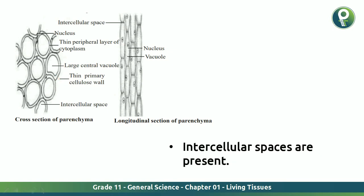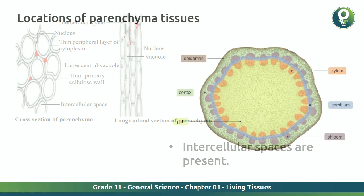Intercellular spaces are also present. You can see there is space in between the cells. When you take a cross-section, you can see exactly that there are spaces, which I am pointing with the red color pen very carefully. Those are the intercellular spaces present in parenchyma tissue.